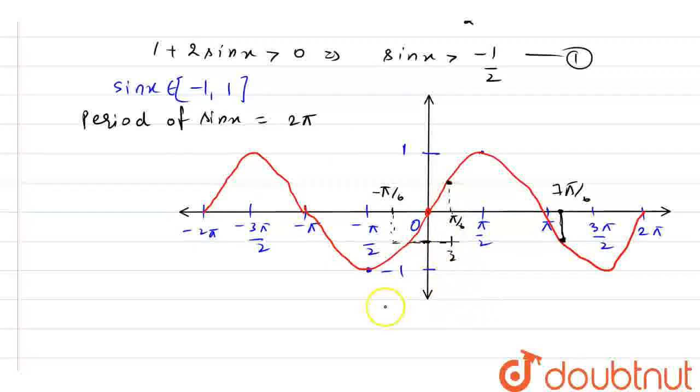So we can say that we need this value which is greater than minus 1 by 2. Now as per the question, we require those values. This will complete your one cycle. So the shaded portion is your one cycle.